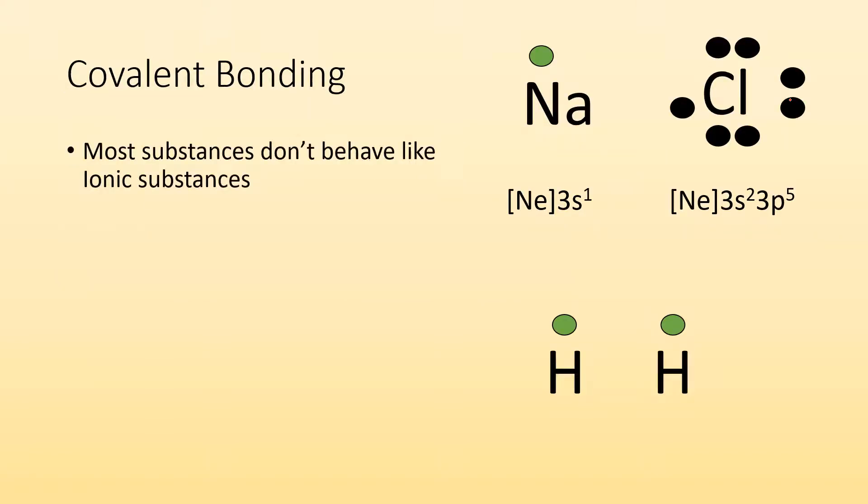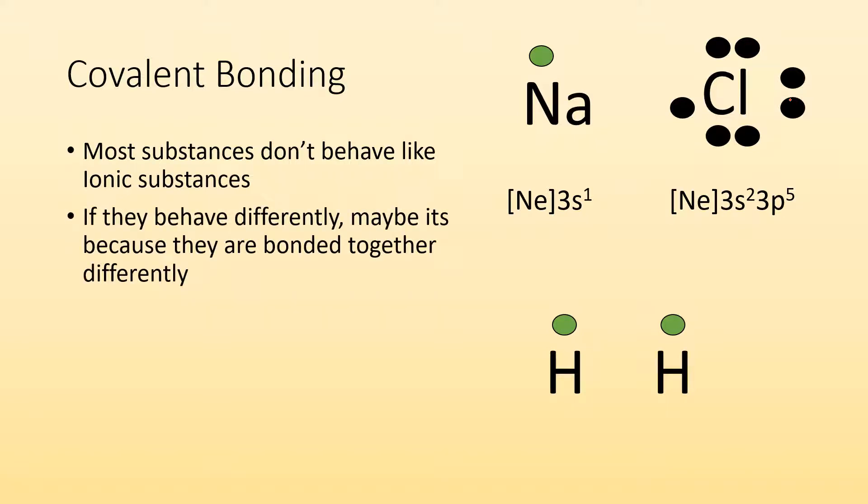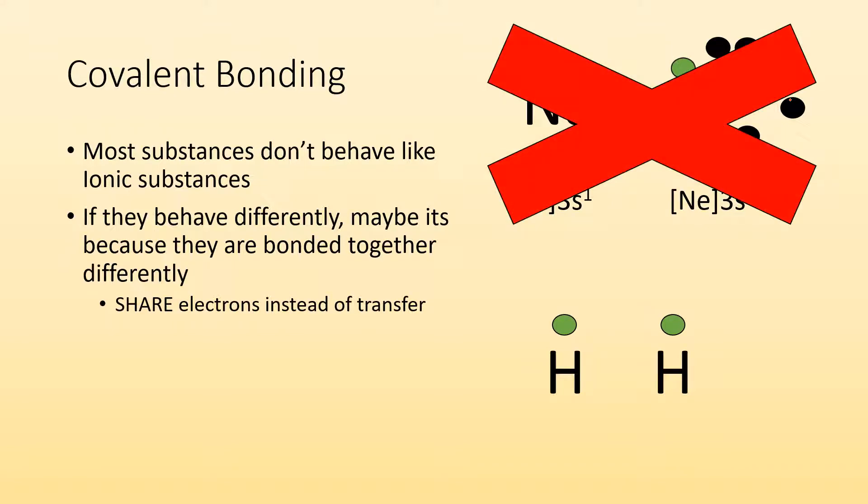Covalent bonding, what's with that stuff? Well, most substances don't behave like ionic substances. So if they behave differently, maybe it's because they're bonded together differently, was the original thought, and it turns out, yeah. So instead of transferring electrons like in ionic bonding, covalent compounds share electrons. So instead, it's atoms kind of pooling their electrons going, hey, I'll share one of mine if you share one of yours. And then that way they end up with more electrons. So the way it goes is both of these hydrogens think that those electrons are theirs, but they're really being shared. So now they're both satisfied because they both have those two electrons. This is still going to achieve the noble gas configuration, which is why it becomes more stable.